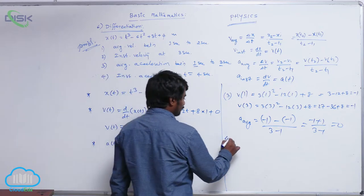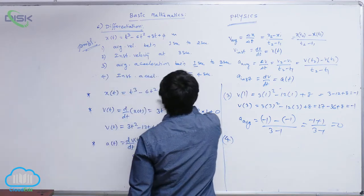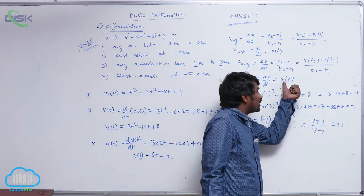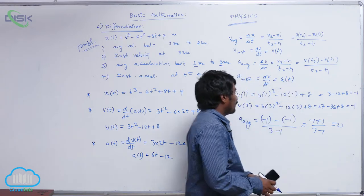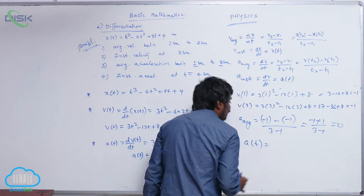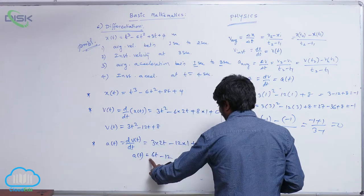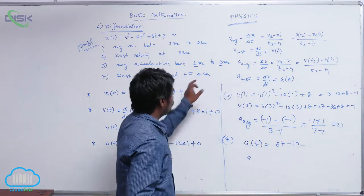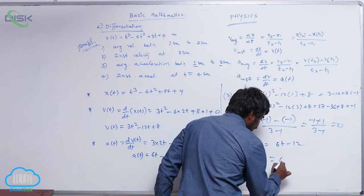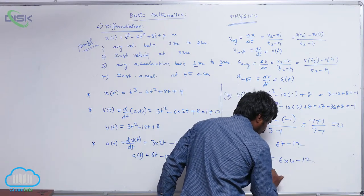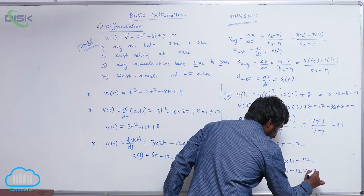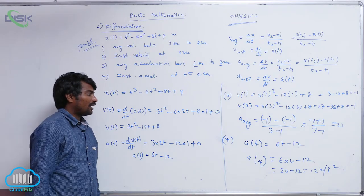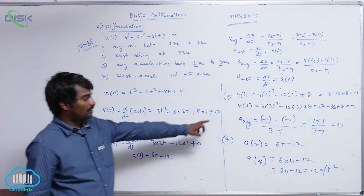For the fourth question — instantaneous acceleration at t = 4 seconds — we use a(t) = 6t - 12. Substituting t = 4: a(4) = 6(4) - 12 = 24 - 12 = 12 meters per second squared.